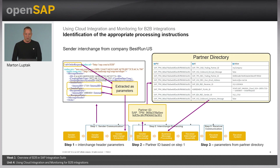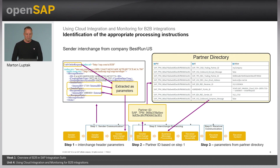Step two calculates the partner ID based on the extracted parameters from step one. Step three then invokes the parameters with the calculated partner ID from the partner directory. You can see in this depiction how many items are dedicated to a certain entry. The partner directory visibility is also exposed within trading partner management, and we will see later in an example how you can drill down the details and navigate back and forth for a certain agreement.